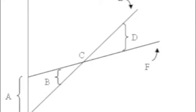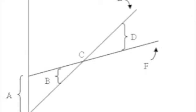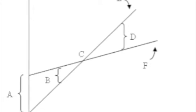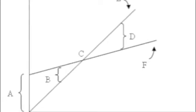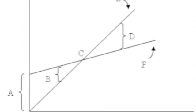On the graph, point A is autonomous consumption, point B is dis-savings, point C is equilibrium, point D is savings, and point E represents the 45-degree reference line while point F represents the consumption function.